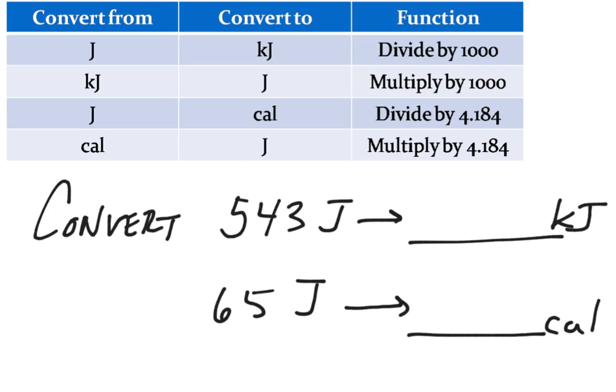If we have 343 joules, converting to kilojoules is simple. We divide by 1,000, or move the decimal point three spots to the left, giving us 0.543 kilojoules. To go from joules to calories, we divide by 4.184. When we take 65 and divide it by 4.184, we find there are 15.54 calories in 65 joules.